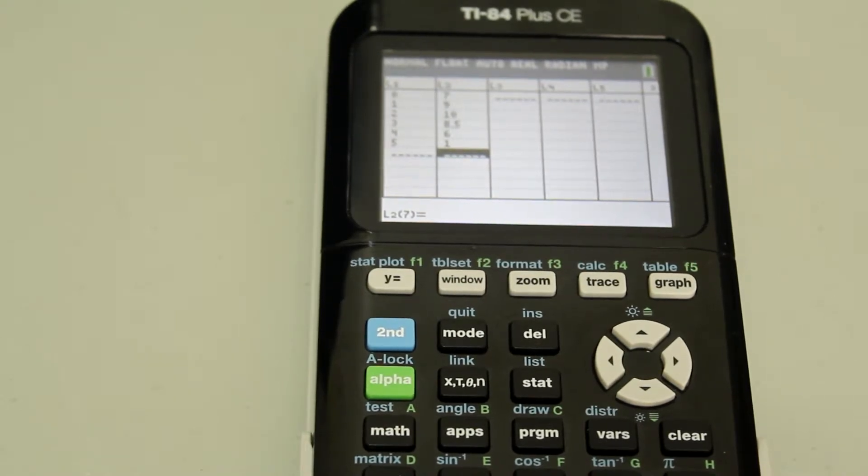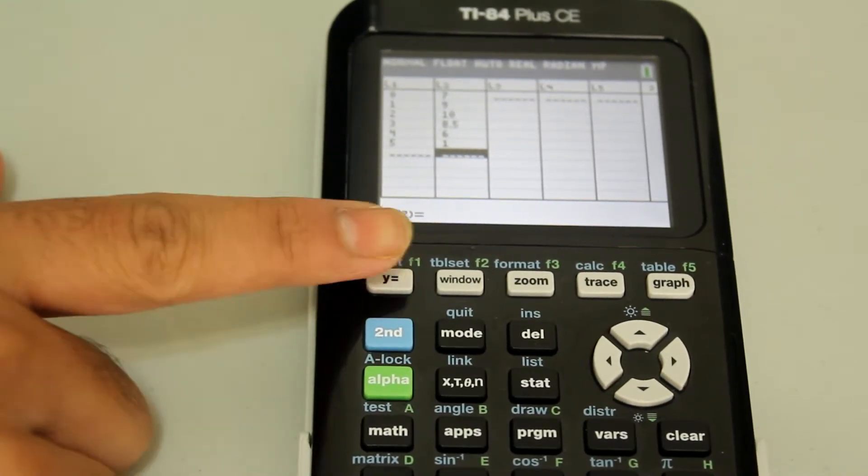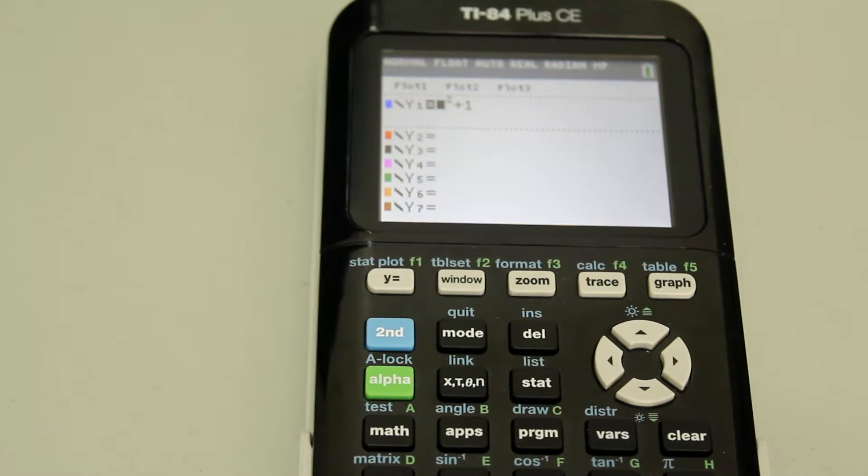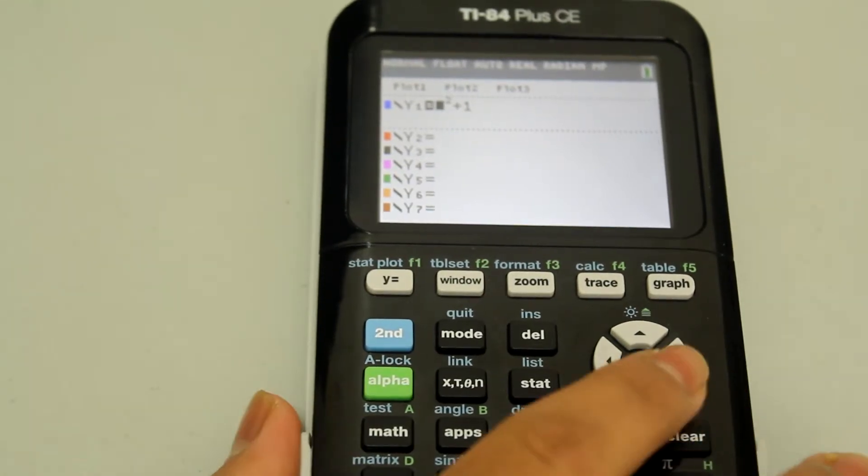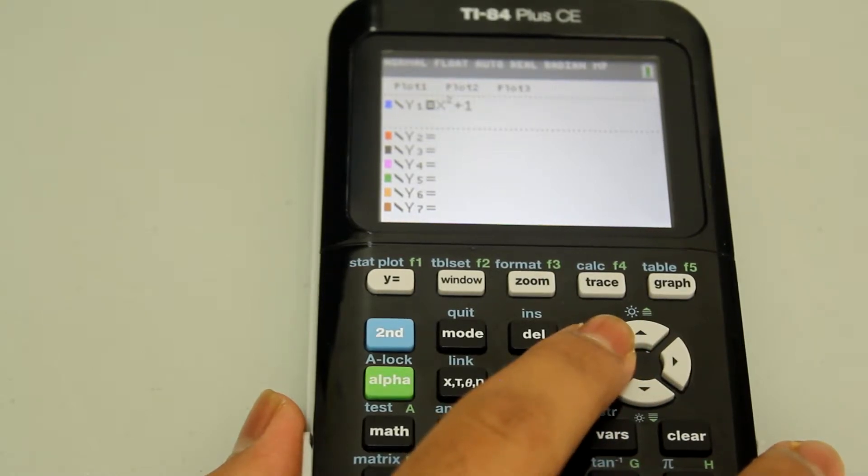Now that we have our data entered, what we're going to do is go into the Y equals screen and make sure that there are no other equations in there. If you do have an equation in there that you will need eventually, instead of clearing it,